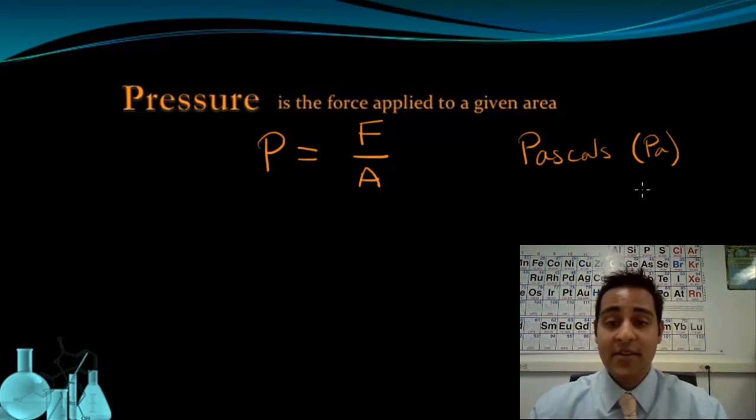Now it turns out that a Pascal, 1 Pascal, is an incredibly small unit. So we actually typically use kilopascals. That's 1,000 Pascals. Kilopascals are going to be the more useful unit for us to use when we're measuring pressure.